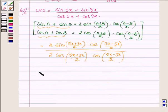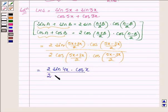Which is further equal to 2 sin - 5x plus 3x is 8x and 8x upon 2 is 4x. Cos 5x minus 3x is 2x and 2x upon 2 is x. In the denominator we have 2 cos 4x into cos x.